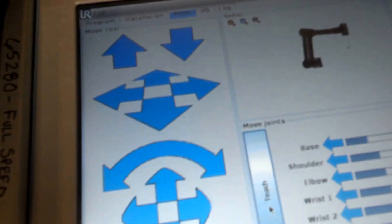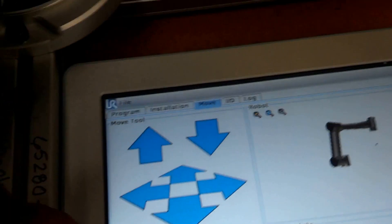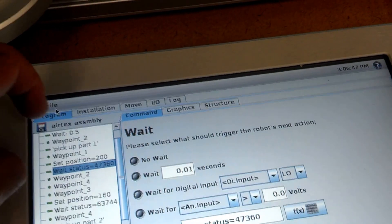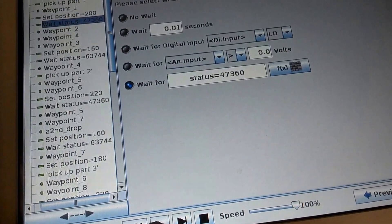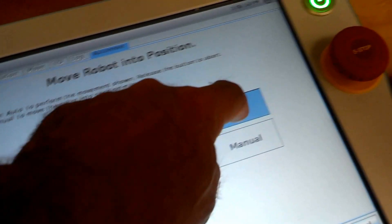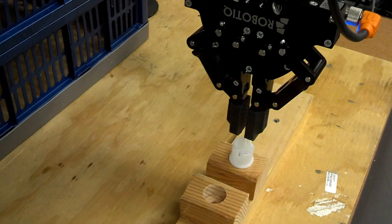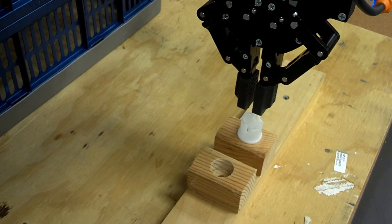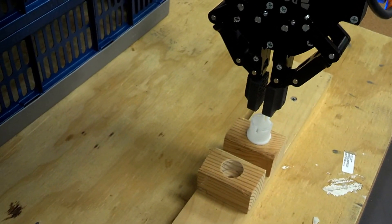So now I will just come over to the universal robot pendant. Hit program. And play. And it says move me into the starting position. So the robot moves into the start position. And then I click ok.